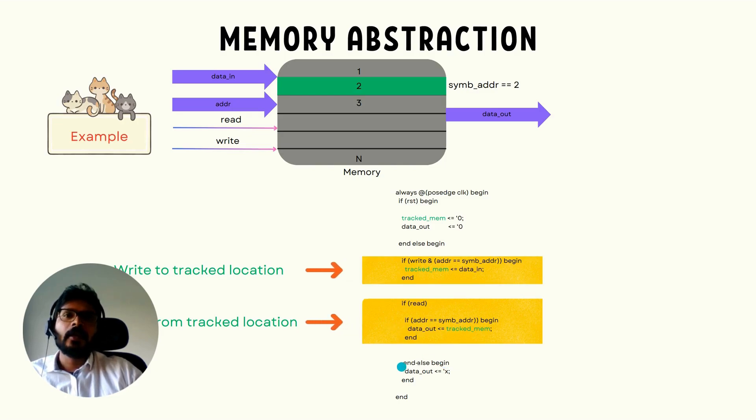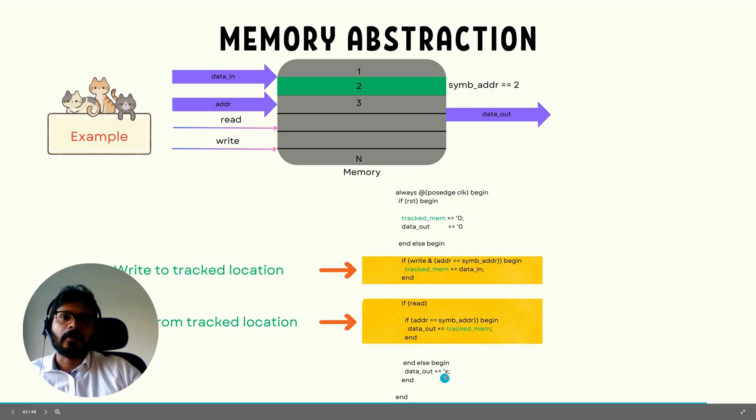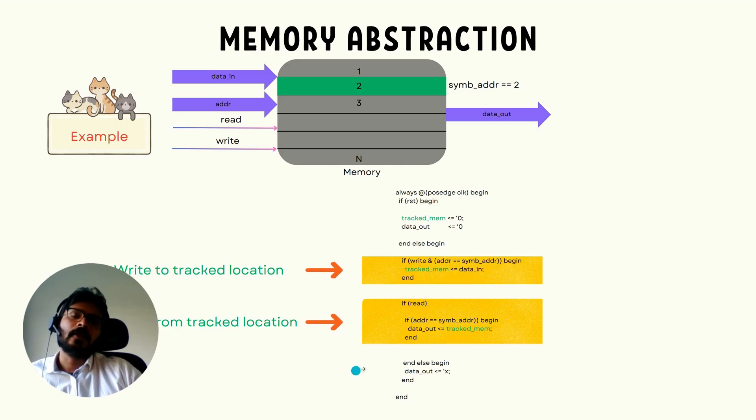And this section shows the read operation. In this read, if the address is equal to symbolic address, then the data out will be the tracked data track_mem. But what happens to all the other cases? All the other reads, their address is not equal to symbolic address. In this abstraction, we don't care about them, but do we tie them to zero? No, we just want to let it take any value.